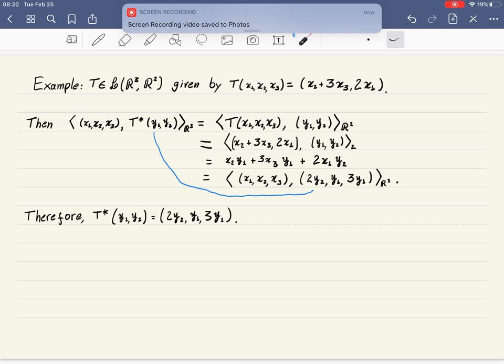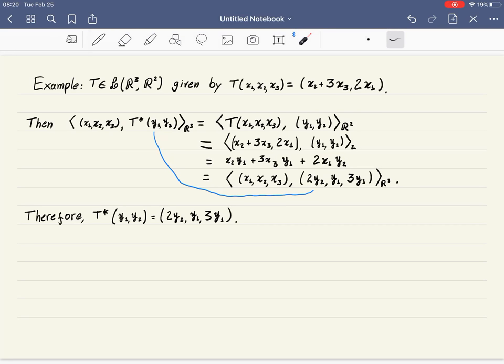Let's illustrate this definition with an example, a simple one. We take a linear map from R³ to R² given by this formula: the first coordinate will be x₂ minus 3x₃, the second coordinate will be 2 times x₁. We want to find what is the adjoint.